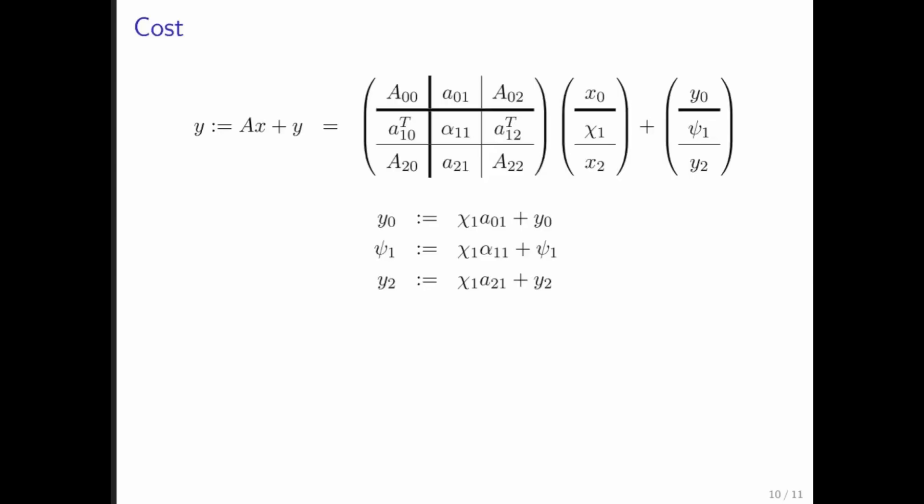Again, what is its cost? Well, we can do a complex cost analysis. Or we can simply recognize that we're still doing all of these computations. We just choose to take our data out of a different place. So the cost is still 2n squared.